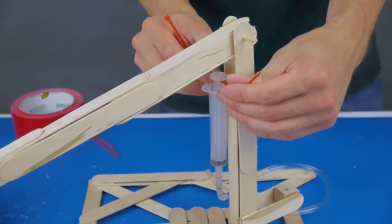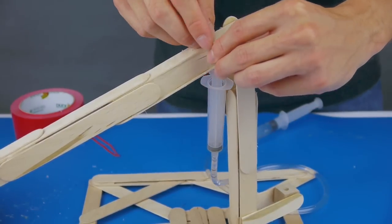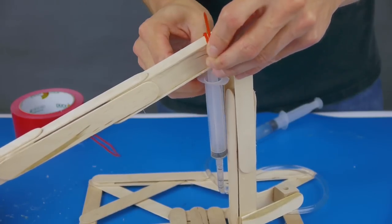Insert a cable tie through the plunger, and then tie it onto the fighting arm. Keep it a little bit loose. If it's too tight, it won't work.